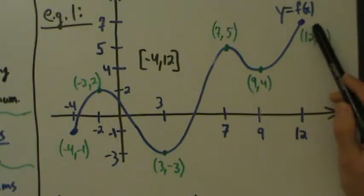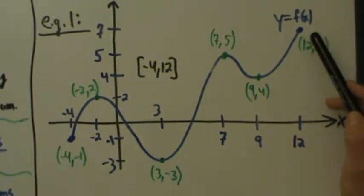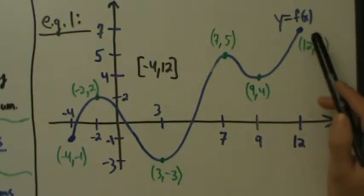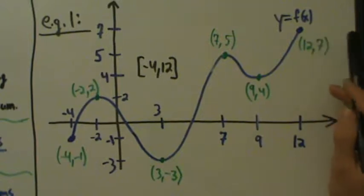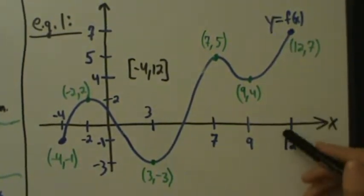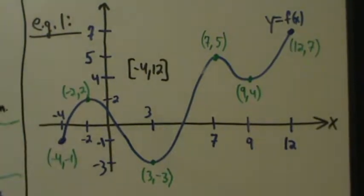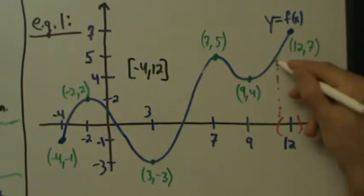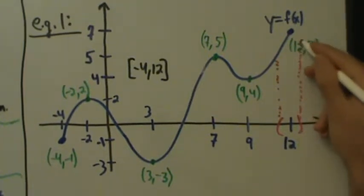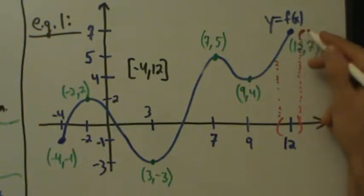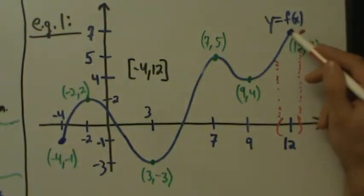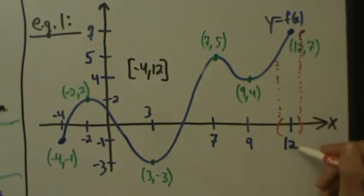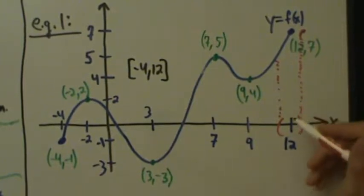This endpoint is not a local max, because remember, functions can't have local mins and local maxes at endpoints. The reason is that the formal definition of a local max or local min says you have to be able to put a small open interval around the x value. So if we try to put an interval around x equals 12, it's fine over here, but this function is not defined to the right of x equals 12 — there's nowhere to go. So this can't be a local max, because you can't take a small neighborhood around x equals 12 to satisfy the definition.